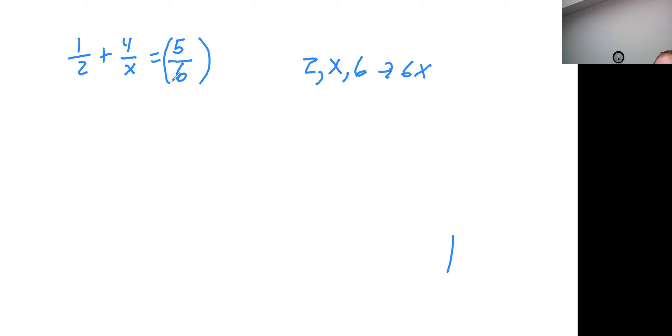The idea is we're going to multiply both sides of the equation by the common denominator. As long as x isn't zero, you're not changing the value of the equation. 2 goes into 6x three times, so 1/2 times 6x is 3x. You can see that this x here will cancel with this x up here, so 6 times 4 is plus 24. On this side of the equation, this 6 will cancel with that 6, and what's left is 5x.